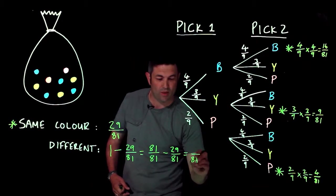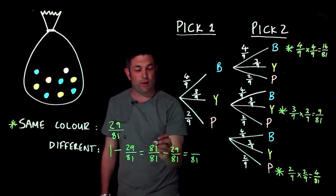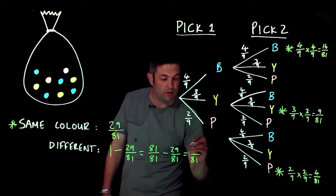But it was actually take away 29, so 52 over 81.